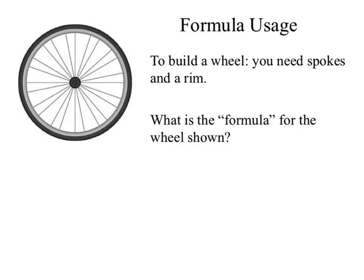So, formula usage. If we had this as a wheel and we had to come up with directions to tell somebody how to put this wheel together, what would we tell them? We need a central axis — one axis. We need spokes; I'm going to guess it's 32. For the spokes, 32 tends to be fairly standard. I used to bike to work three times a week, so I happen to know that the standard spoke count is 32.